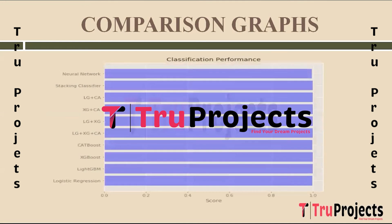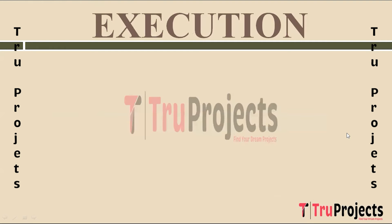This is the accuracy comparison graph, where the x-axis shows accuracy scores and the y-axis shows algorithm names. We can see all the models are performing well.